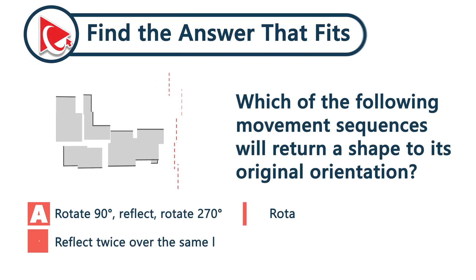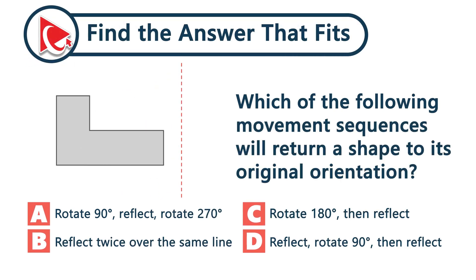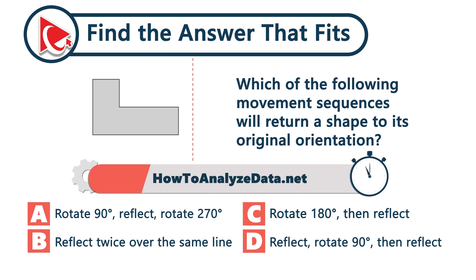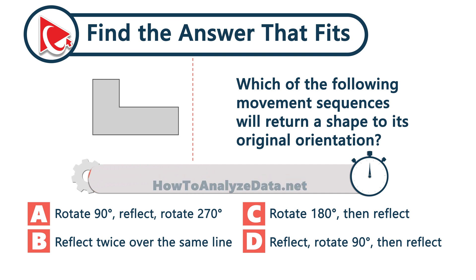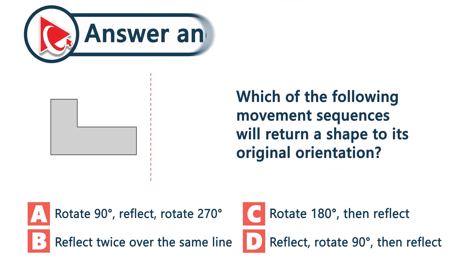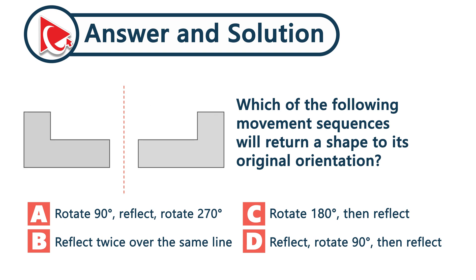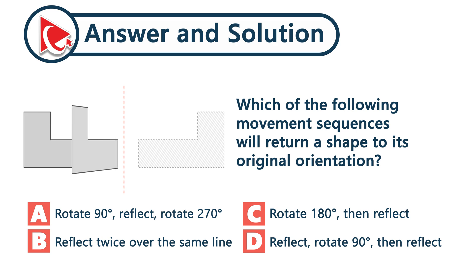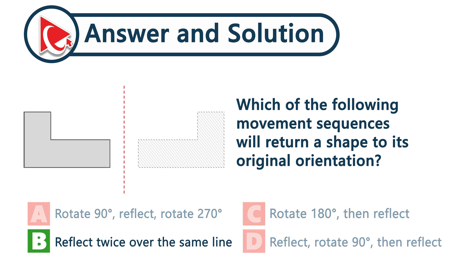Which of the following movement sequences will return a shape to its original orientation? Reflecting a shape twice over the same line cancels the transformation. It's the only option that puts the shape right back where it began, perfectly aligned. The correct answer is choice B — reflect twice over the same line.